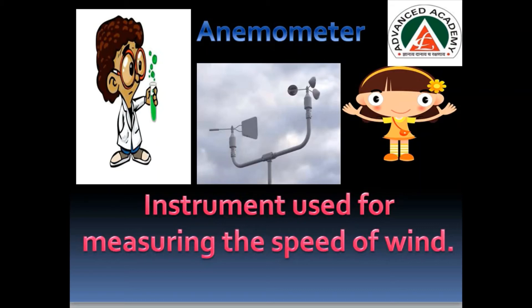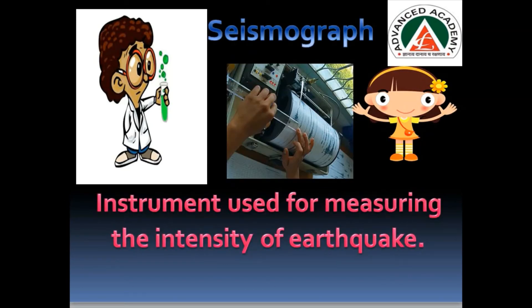Then uncle showed another instrument and told her, 'This is a seismograph, Pihu. It is used for measuring the intensity of an earthquake.' Pihu got frightened. 'Earthquake? So we can measure the intensity of an earthquake also?' 'Yes, Pihu, because we should know what the intensity of an earthquake is if it has occurred anywhere.'